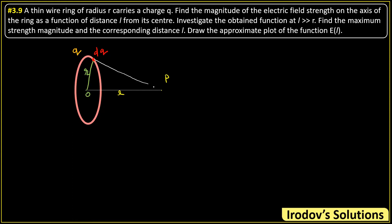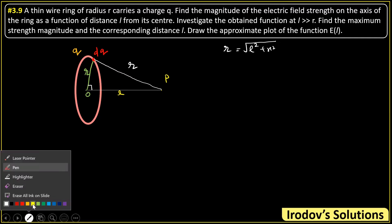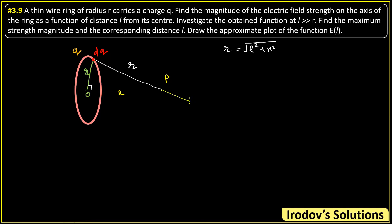Because of that dq, we want to find the electric field at P. The line from dq to P has distance r (small r). Thinking in 3D, the ring plane is perpendicular to the plane of the screen, so the angle between the radius and the axis is 90 degrees. The distance small r equals sqrt(l² + x²). The electric field dE due to charge dq has magnitude k·dq / r². Suppose this angle is theta; then cos theta equals l divided by small r.